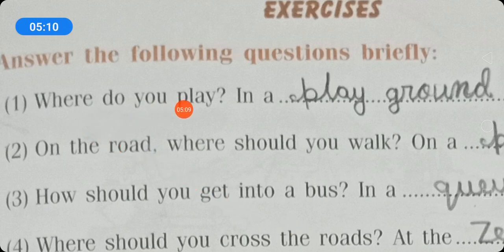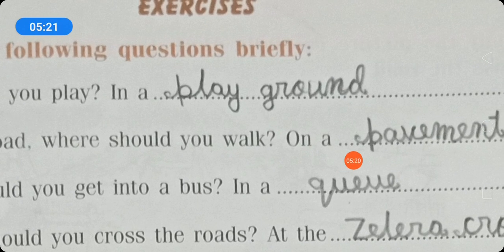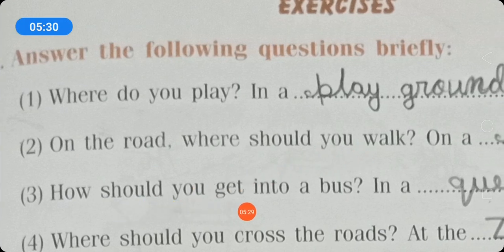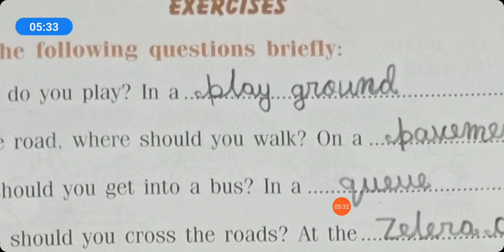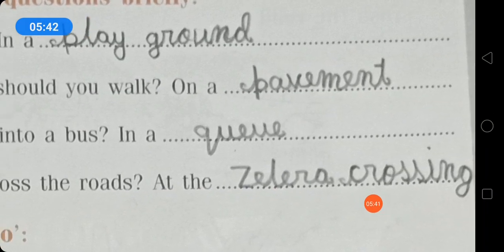Now, question answers. Where do you play? In a playground. We should not play on the road; we should play in a playground. On the road, where should you walk? We should walk on a pavement or on footpath. How should you get into a bus? In a queue. Where should you cross the roads? At the zebra crossing.